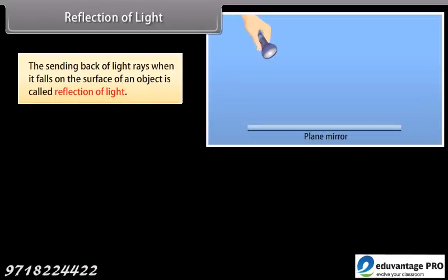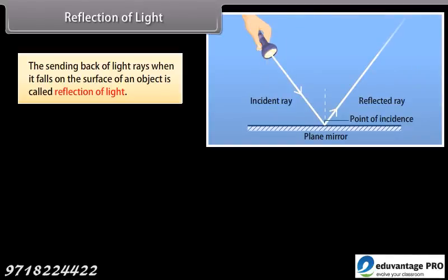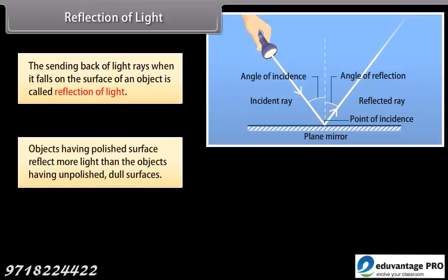Reflection of light. The sending back of light rays when it falls on the surface of an object is called reflection of light. Objects having polished surfaces reflect more light than objects having unpolished dull surfaces.